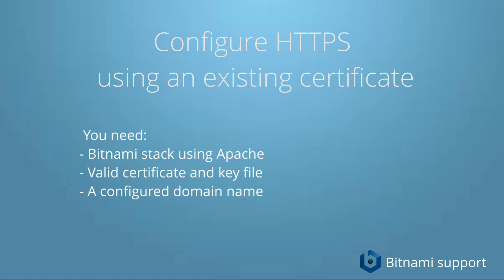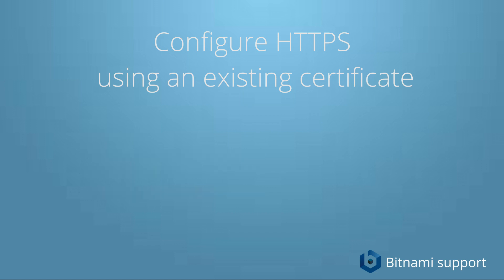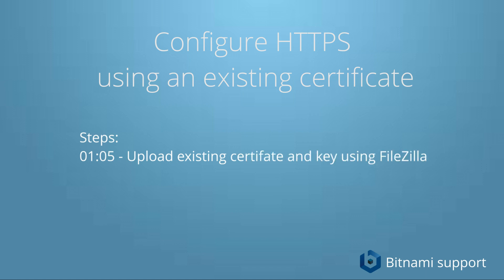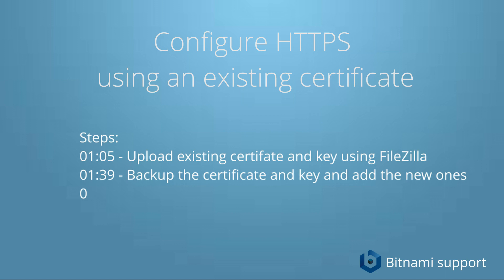These are the steps we will follow. First, we will upload the existing certificate and key using FileZilla, which is an SFTP application. Then we will back up the instance's dummy certificate and key and replace them with the new ones. After that we will set the right permissions, then restart Apache and check if everything is working.